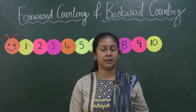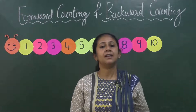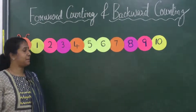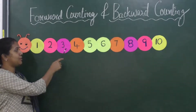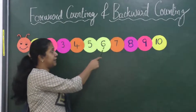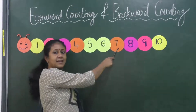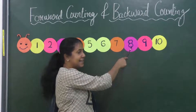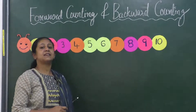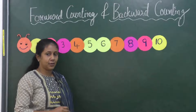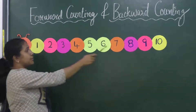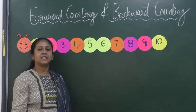You all know to count the numbers from 1 to 10, right? Let's count the numbers together. 1, 2, 3, 4, 5, 6, 7, 8, 9, 10. So children, this is forward counting — we are counting from a small number to a big number, from 1 to 10.